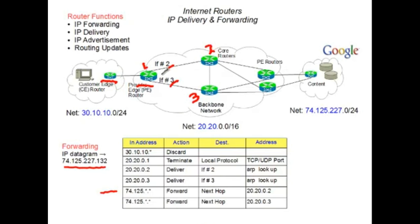IP routing in this example is going to be done on a hop-by-hop basis. That means that our edge router has no knowledge of the total network topology. All it needs to know and understand is the next router that it needs to pass the IP packet to — and that's called hop-by-hop routing.